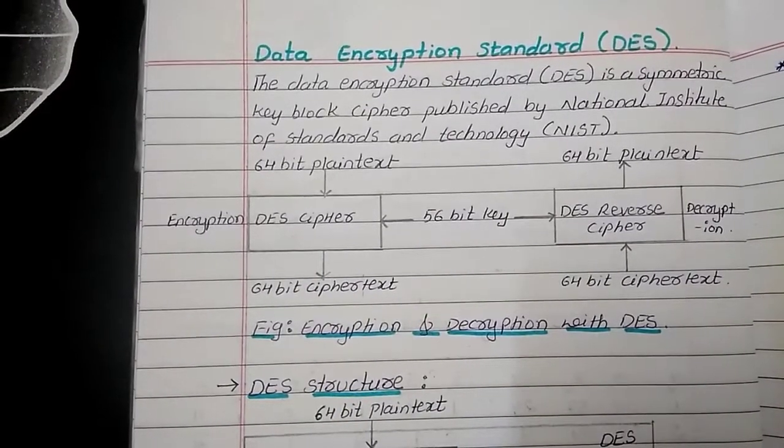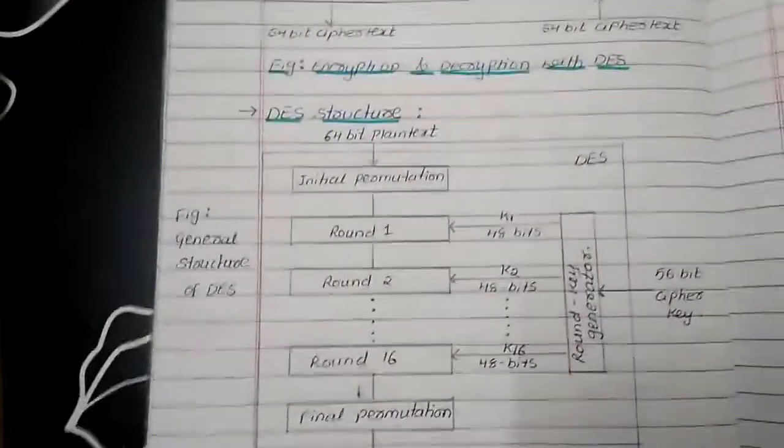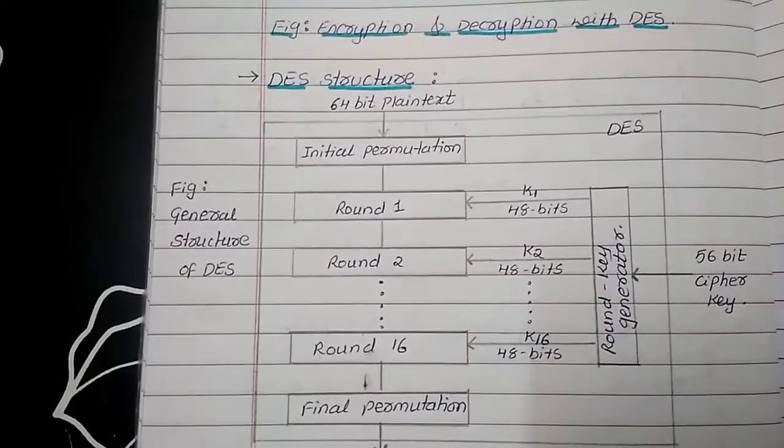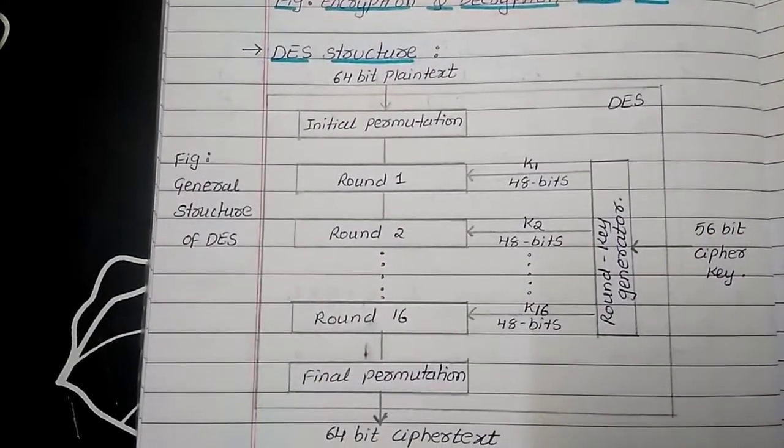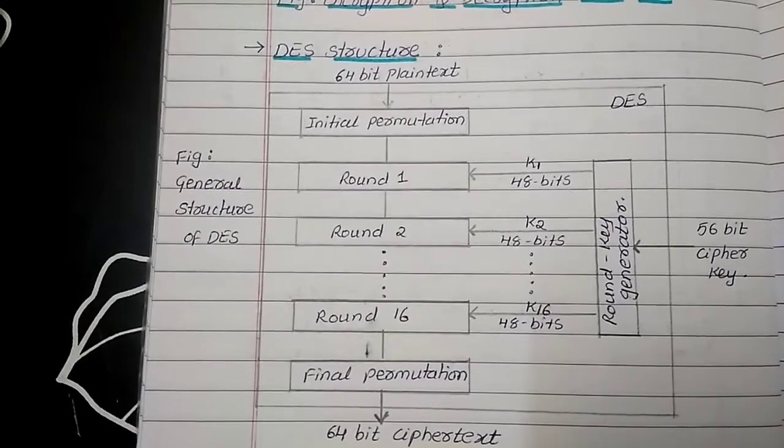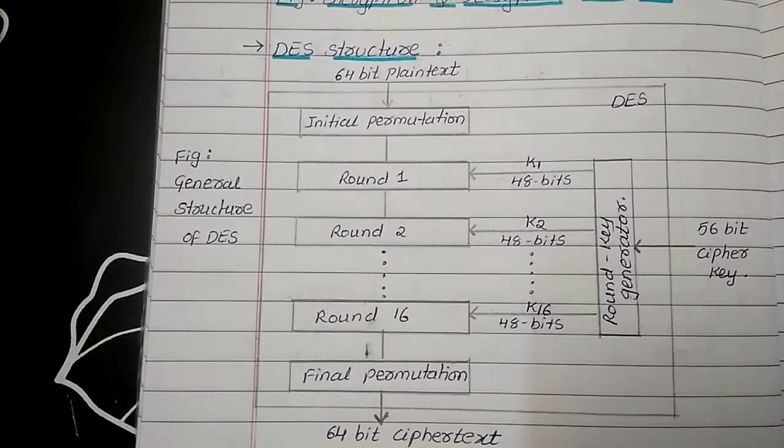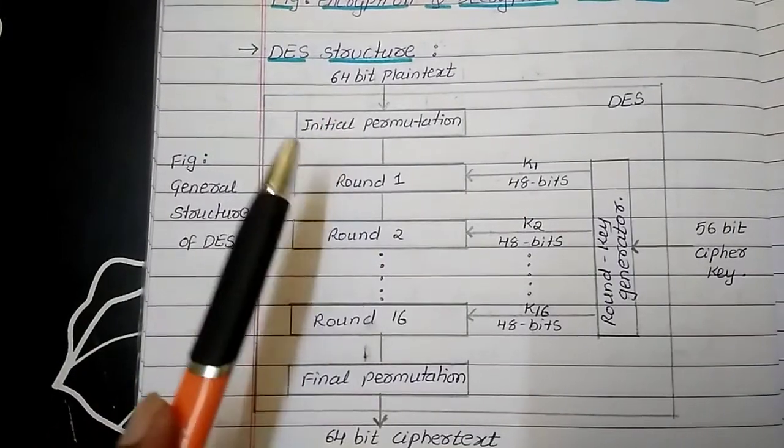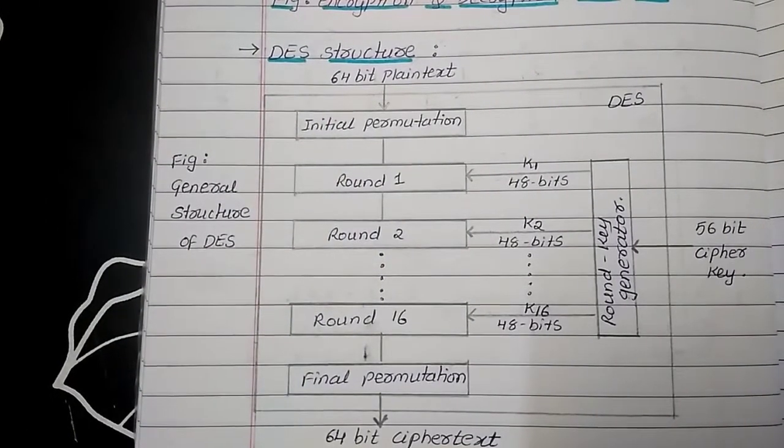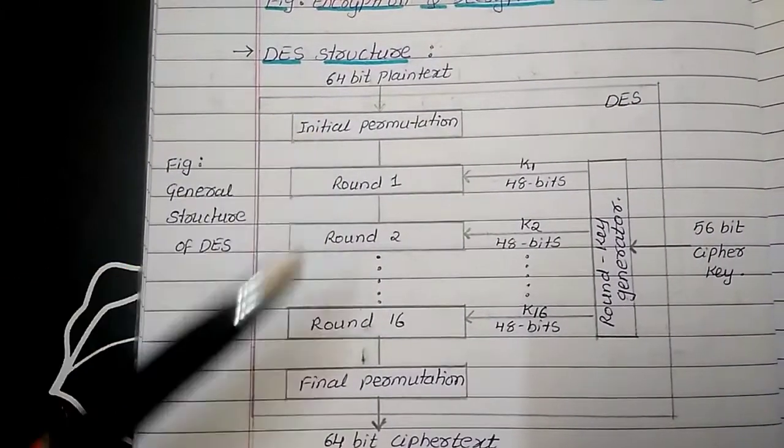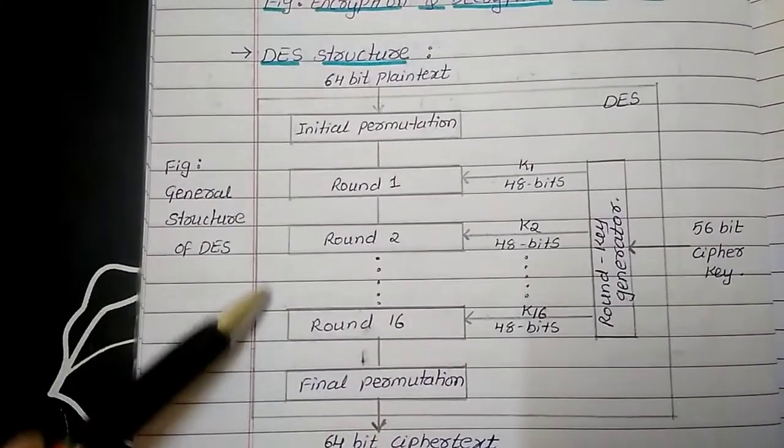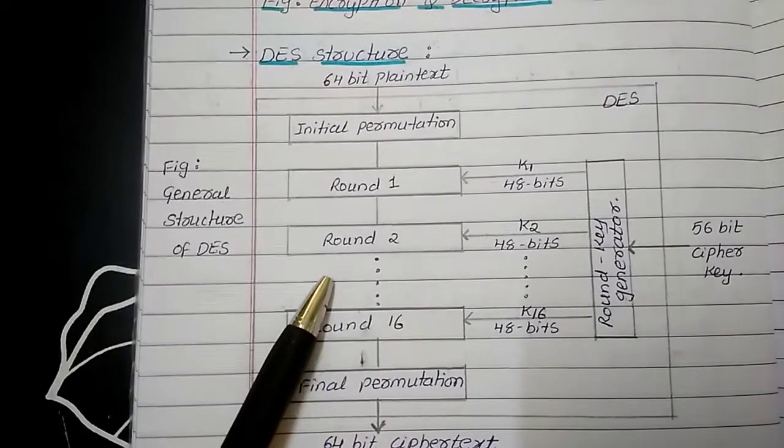Now, let us see the DES structure in detail. This is the DES structure. As we can see, the DES structure is accepting 64-bit plaintext. It is having two P boxes called initial permutation and final permutation. In between this, we are having total 16 rounds of DES function.